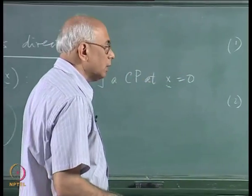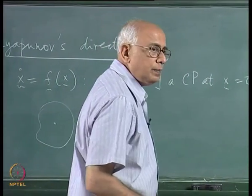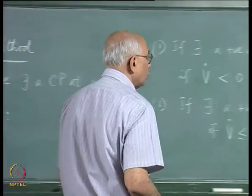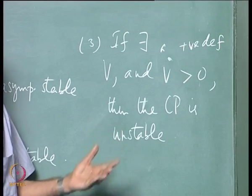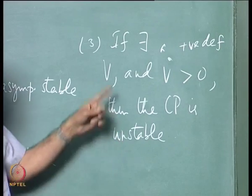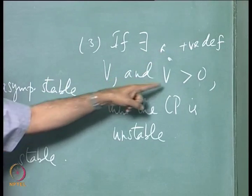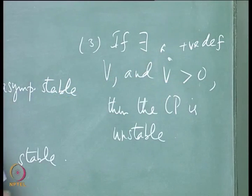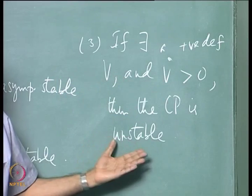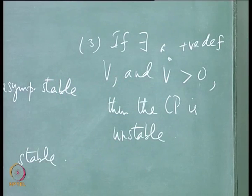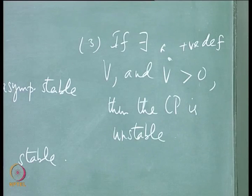Many refinements of these statements are possible, but these are the simplest versions. Note that you could consider −V instead of V, translating positive definiteness into negative definiteness. The time derivative V̇ equals ∇V · ẋ = ∇V · f, which is the dot product of the gradient of V with the vector field. Geometrically this tells you whether the flow is directed inward or outward relative to the level surfaces of V.